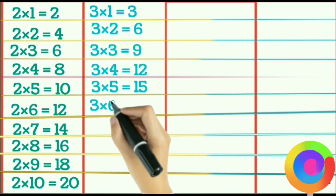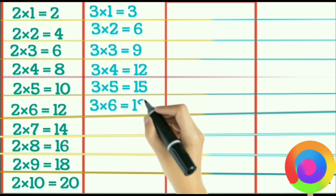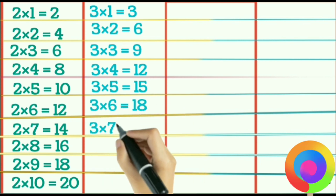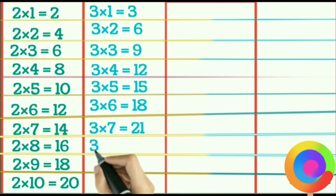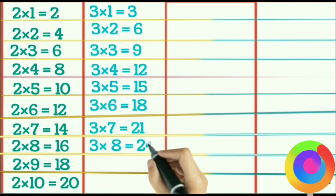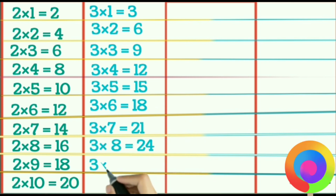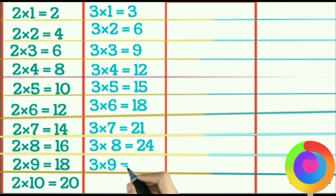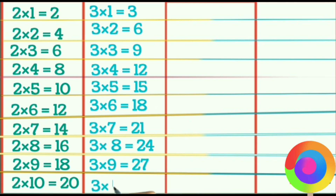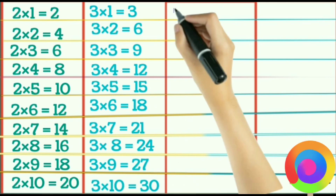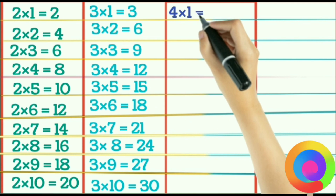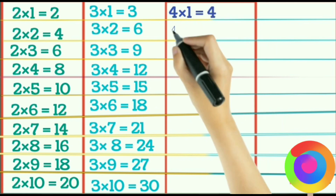3×6 is 18, 3×7 is 21, 3×8 is 24, 3×9 is 27, 3×10 is 30.